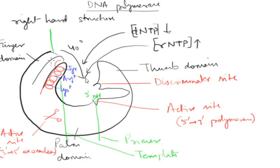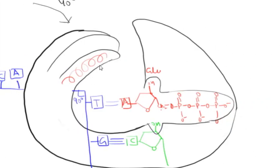Once the O-helix forms hydrophobic and ionic interactions with the incoming nucleotide, it undergoes a conformational change where the finger domain moves 40 degrees inward, thus pushing the nucleotide right into the 5' to 3' polymerase active site. This is the enlarged detailed structure of the DNA polymerase active site where the role of the discriminator site is shown.